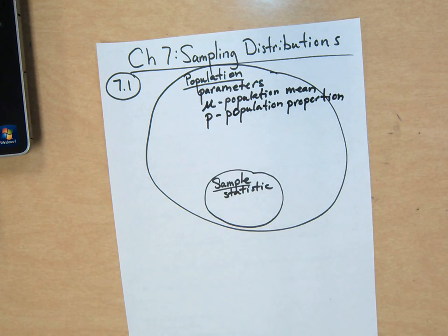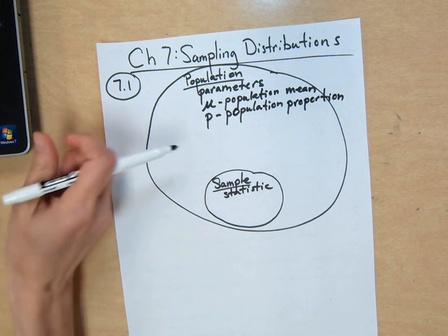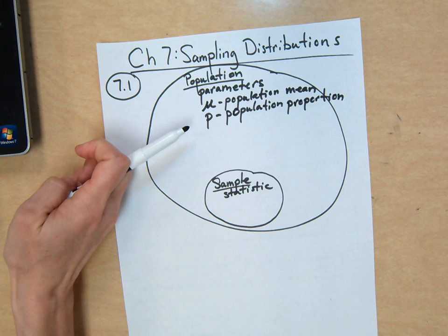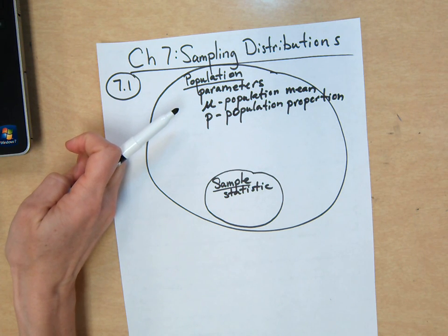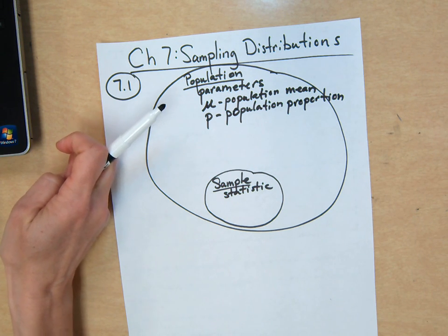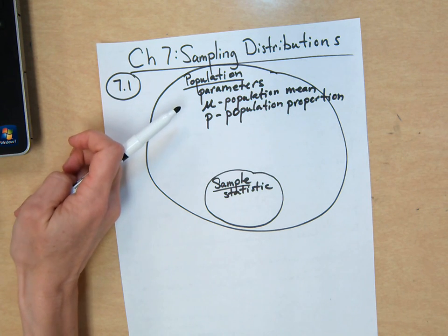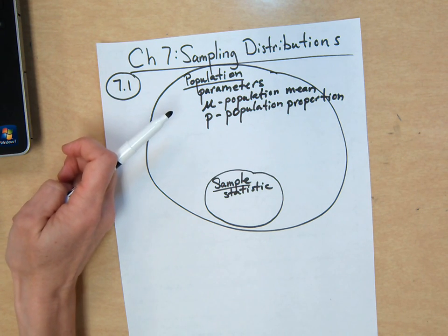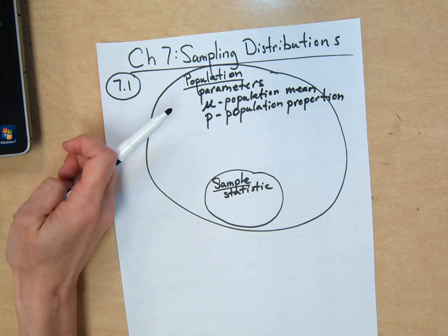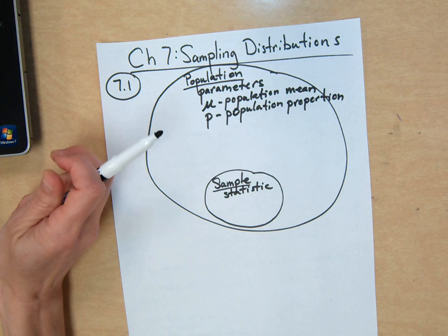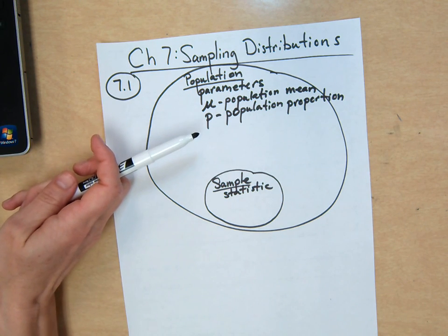So, for example, if we want to know in this class what proportion of you guys watched Empire over the break, that would be P. What proportion. Mean might be how many hours on average did you spend watching Empire. So there are other things that we can find about a population, like the minimum, the maximum, the median, the interquartile range. But usually, if it's categorical data, we want to know a proportion.